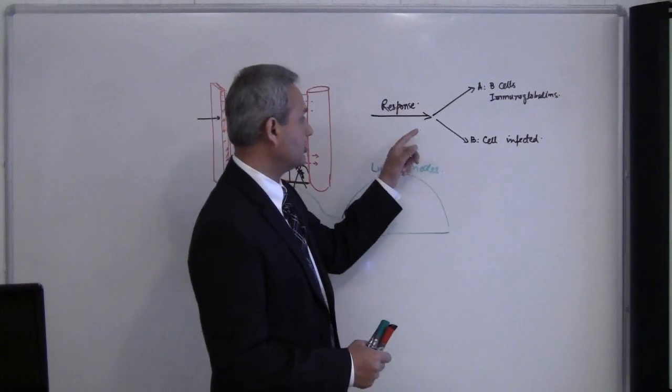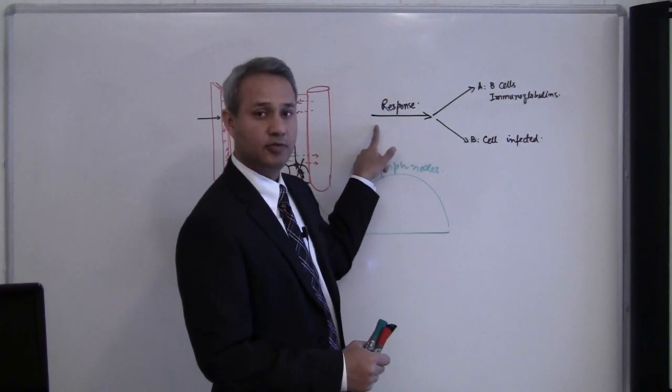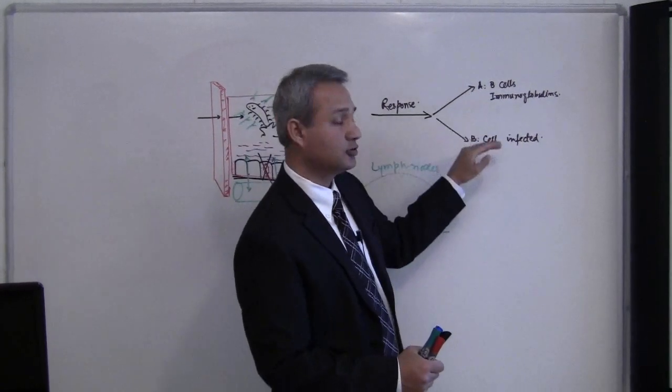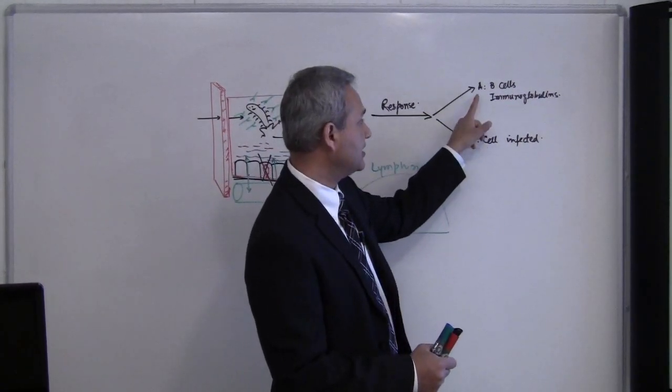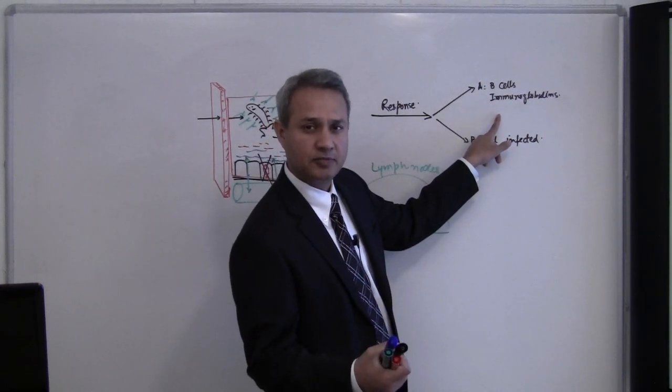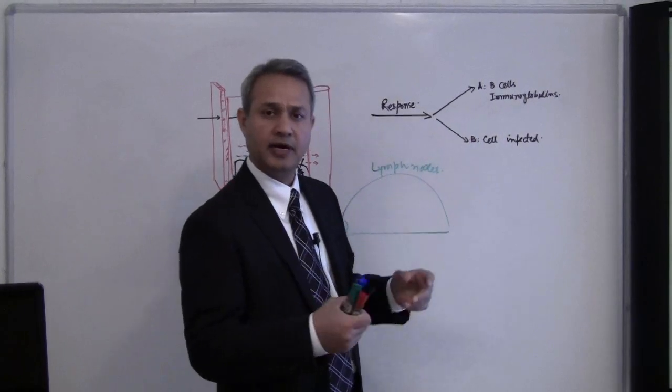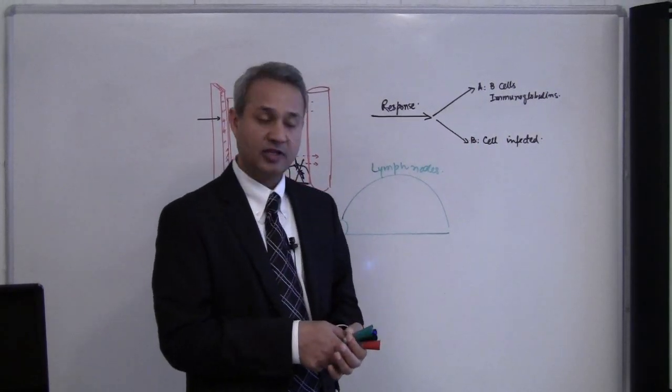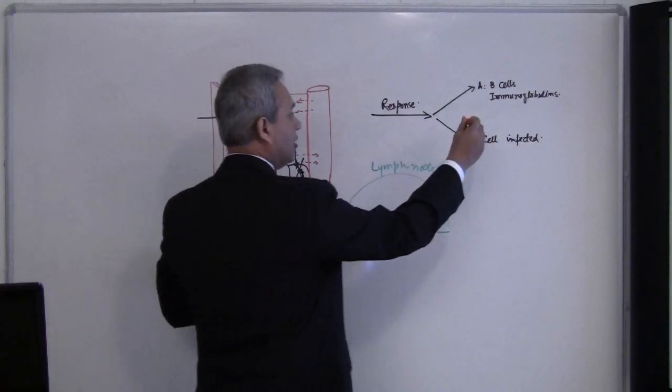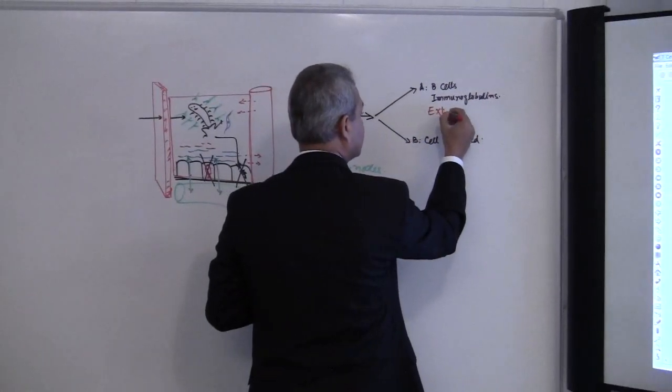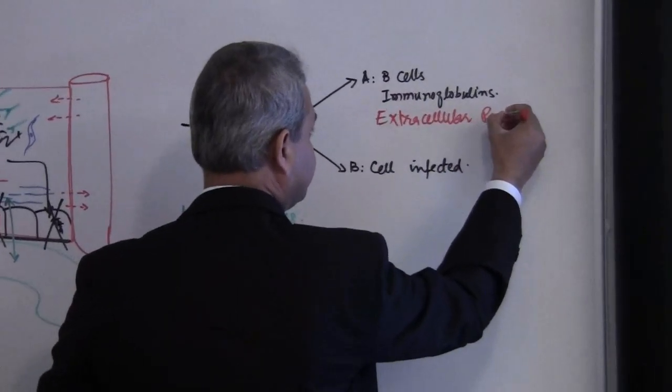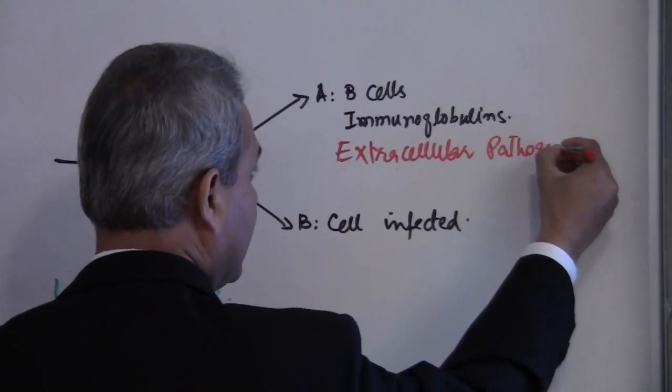All right, so we were talking about how the response from the body for a pathogen can go in one of two directions. Either it can take path A, which is the B cells mediated path, primarily the humoral path where proteins are produced and they take care of extracellular pathogens. That is path A.